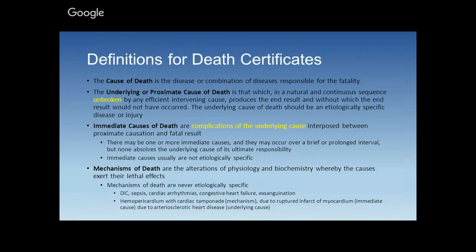Definitions on the death certificate: the cause of death is the disease or combination of diseases responsible for the fatality. The underlying proximate cause of death is that which in a natural and continuous sequence, unbroken by any other event or effective intervening cause, produces the end result and without which the end result would not have occurred. The underlying cause of death should be an etiologically specific disease or injury.